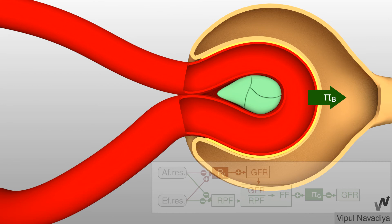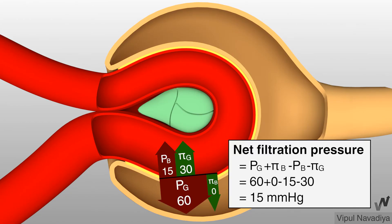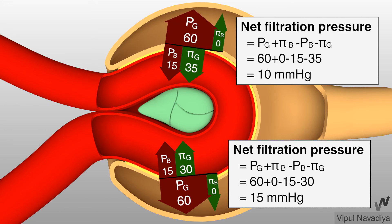Now, colloid osmotic pressure of proteins in Bowman's capsule promotes filtration. Under normal conditions, the concentration of proteins in the glomerular filtrate is so low that colloid osmotic pressure in Bowman's capsule is considered to be zero. Putting all these pressures together, net filtration pressure is 15 mmHg at the afferent end and 10 mmHg at the efferent end of the capillary.